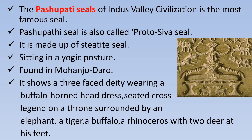The Pashupati Seal of the Indus Valley Civilization is the most famous seal, also called the Proto-Shiva Seal. It is made of steatite and shows a figure sitting in a yogic posture, found in Mohenjo-daro. It shows a three-faced deity wearing a buffalo-horned headdress, seated cross-legged on a throne, surrounded by an elephant, a tiger, a buffalo and a rhinoceros, with two deer at his feet.